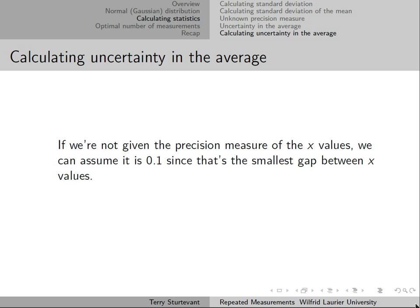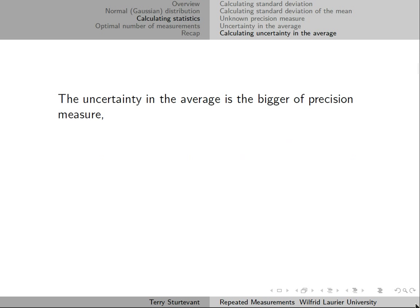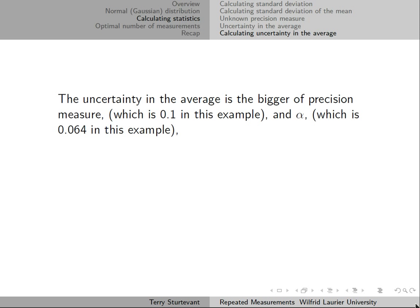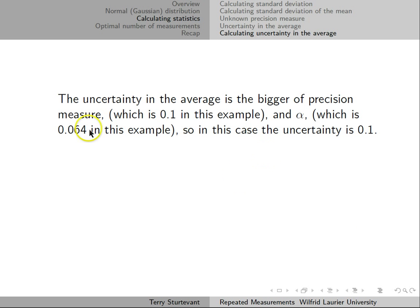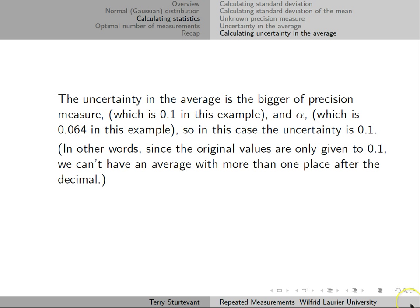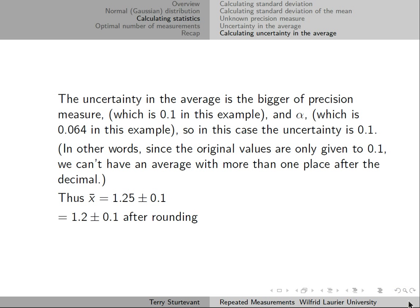If we're not given the precision measure of the x values, we can assume it is 0.1, since it's the smallest gap between them. From our previous example, the standard deviation of the mean is 0.064. The uncertainty in the average is the bigger of the precision measure (0.1) and alpha (0.064), so the uncertainty is 0.1 because 0.1 is bigger than 0.064. Therefore, the uncertainty in the average is 1.25 plus or minus 0.1, which rounds to 1.2 plus or minus 0.1.